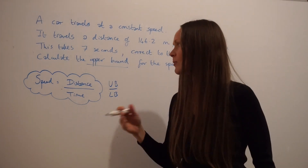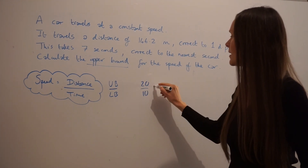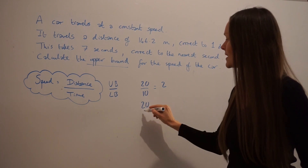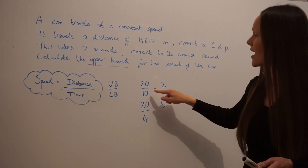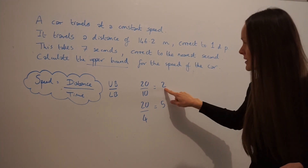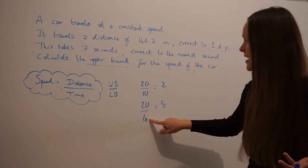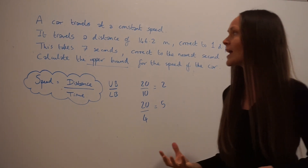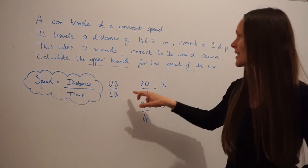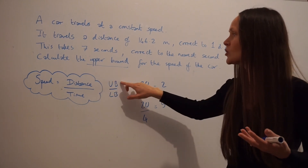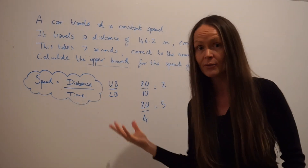I'll just give you a quick example of numbers to show you why this is the case. If I take the number 20 and I divide it by 10, I get 2. If I take the number 20 and I divide it by 4, I get 5. Can you see that when you divide by a larger number you have a smaller result? When you divide that same number by a smaller number — because 4 is smaller than 10 — you get a larger answer. So in order to get the upper bound for the speed, the greatest possible speed, you need to take the upper bound for the distance, and divide by the smallest possible number, i.e. the lower bound for time.